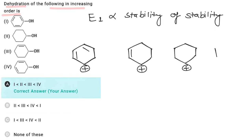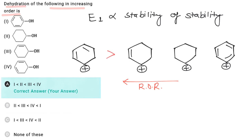In the last case, the carbocation formed is a highly unstable phenyl carbocation because the sp2 hybridized carbon is having positive charge. So the correct sequence of dehydration is maximum in 4, then 3, then 2, and first is least reactive. Hence the correct answer is E.